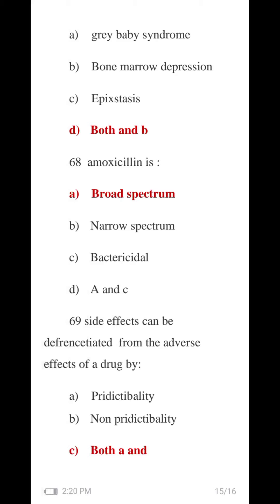Question 68: Amoxicillin is a broad-spectrum antibiotic. It has a narrow spectrum at low concentrations. Amoxicillin is undesirable and more dependent on non-production of penicillinase. The correct answer — both A and B — is option D, which is correct.